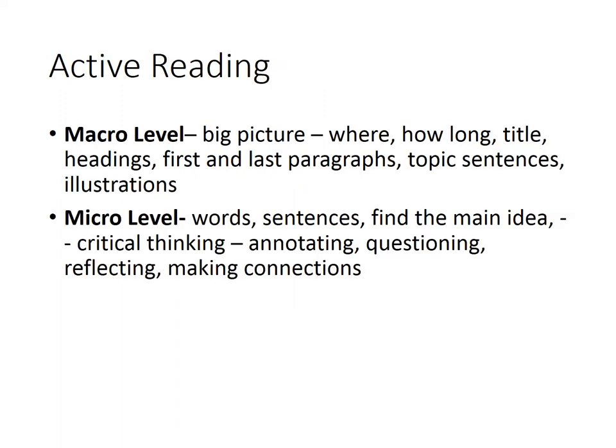When you're an active reader, as discussed in the earlier chapters, you have two different levels of reading. There's the macro level — the big picture level. That's where you're looking at where is this printed: is it in a magazine, an essay, a book, a textbook? How long is it? What's the title? You look at headings, you look at first and last paragraphs to get an idea of what it's going to be talking about. You look at topic sentences — the first sentences in the paragraphs — to see the main ideas throughout the reading. Also, any illustrations, graphs, or anything included in the reading will help you understand what they're talking about.